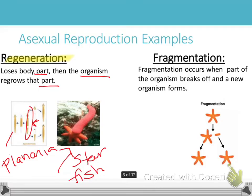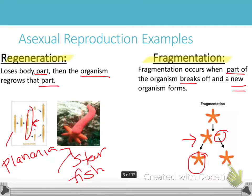Fragmentation occurs when part of the organism breaks off and a new organism is formed. The planera does both regeneration and fragmentation. In this picture of the starfish, it's showing you that regeneration and fragmentation are actually both happening. On one side, the arm broke off and then re-grew — that's regeneration. On the other side, an arm broke off and a whole new organism grew back — and that's fragmentation.